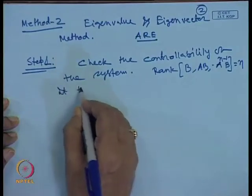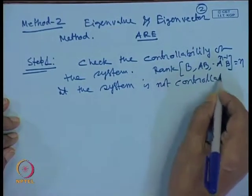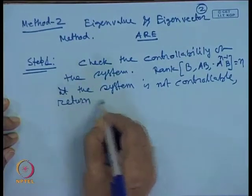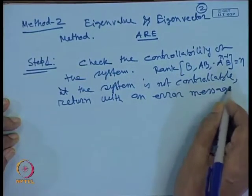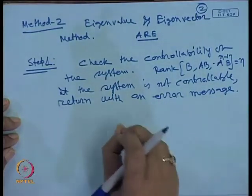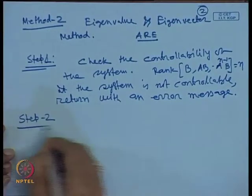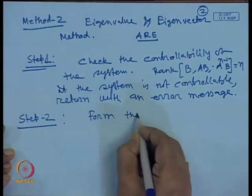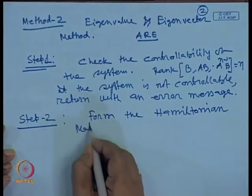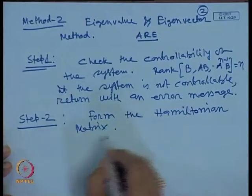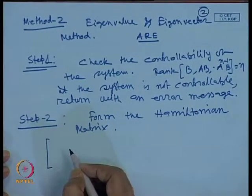If this controllability condition fails, the program will show an error message and we will not be able to design the LQR problem. Step 2: Form the Hamiltonian matrix. We need the information from matrices A, B, Q, and R.